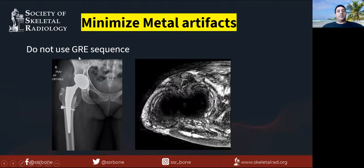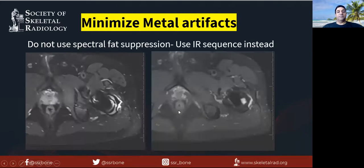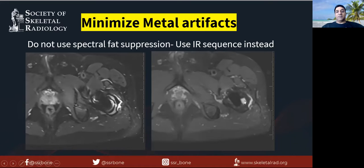To minimize metal artifacts, do not use gradient echo sequences — they're fast but not good. Here you can see a metal prosthesis with a lot of artifact. Do not use spectral fat suppression because you get a lot of artifacts and you can hide areas of particle disease which are better seen on the inversion recovery sequence. Inversion recovery is based on timing, not frequencies, and the frequencies are disturbed while timing is not — so you can use the inversion recovery sequence.